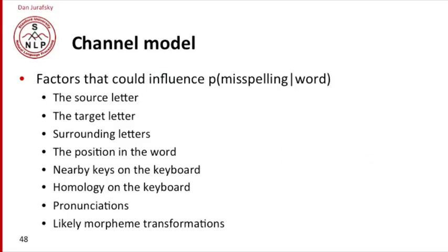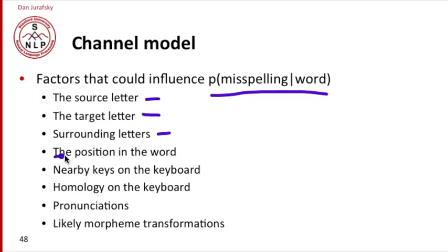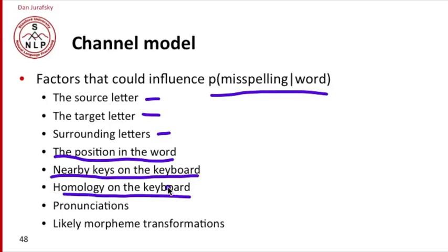We can consider a very large number of factors that could influence the probability of a misspelling given the word — the channel model. We've talked about the source letter or target letter and one surrounding letter, but we could look at more surrounding letters, or the position in the word. We might explicitly model the keyboard and talk about nearby keys, or homology — we're likely to mistype a word with our left hand third finger by using our right hand third finger. A key on the same finger on the alternate hand is homologous. We might also use pronunciations or likely morpheme transformations.